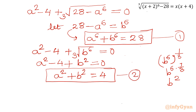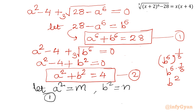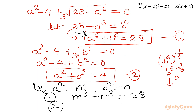Now we have to solve this system where a power 6 plus b power 6 is 28, and a squared plus b squared is equal to 4. So I will use another substitution: let a squared equal m and b squared equal n. So equation 1 becomes m cubed plus n cubed equal to 28, and equation 2 becomes m plus n equal to 4. Let us solve this easy system for the value of m and n.